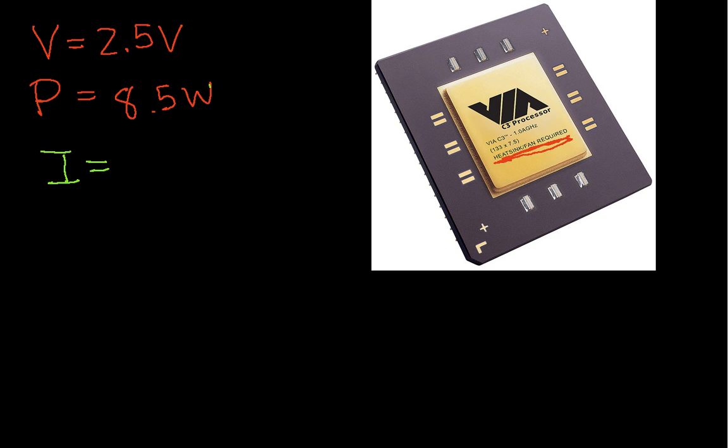Well, doing a simple algebraic manipulation on our relationship between voltage and power and current, we find that the current is P over V, so that's going to be 8.5 watts over 2.5 volts. If I do the computation using my favorite calculator, which right now is Google search, this means the peak current is going to be 3.4 amps.